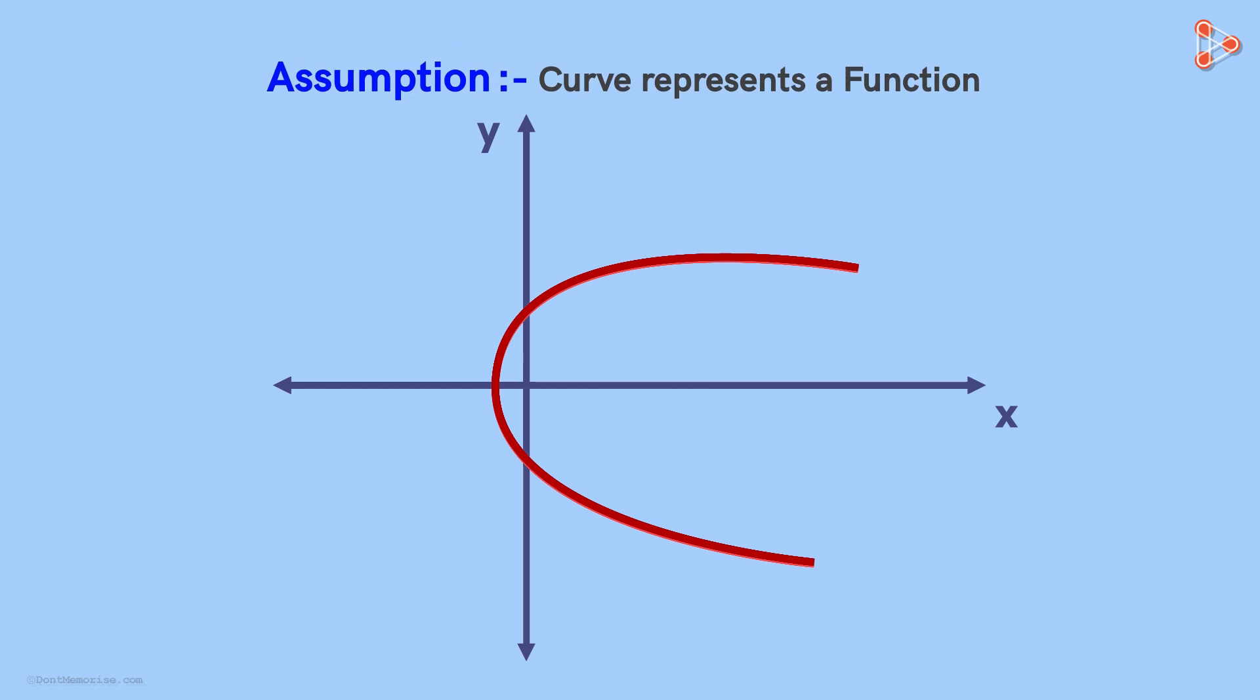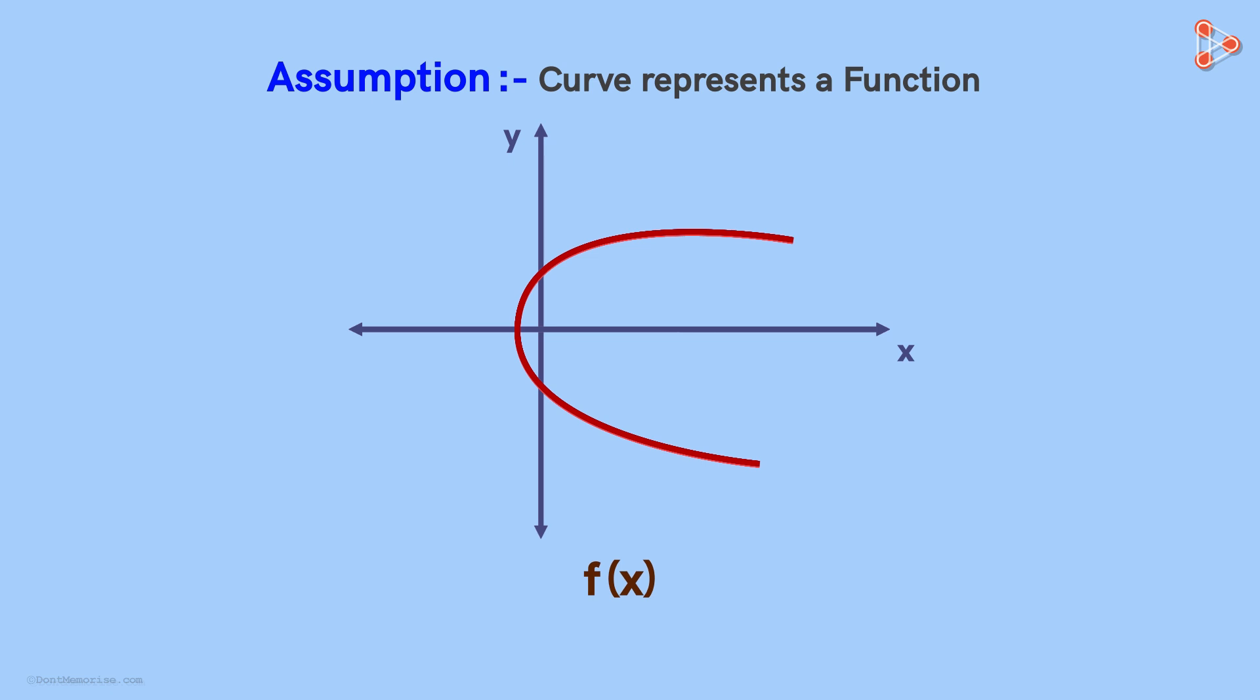We usually denote a function in this way. It's read as f of x. This notation is made up of three things. First, x here represents the independent variable. Second, f represents the function itself. Third, f of x together represents the dependent variable which we earlier denoted by Y.